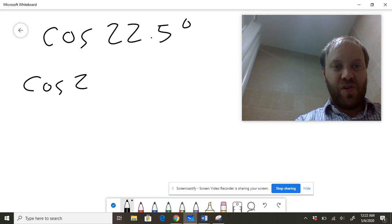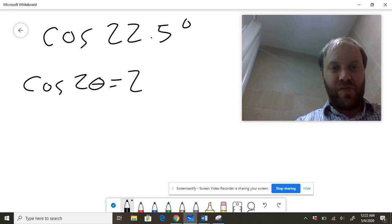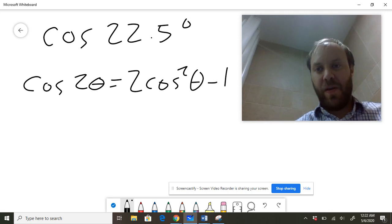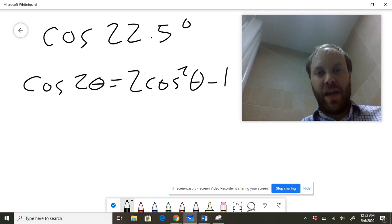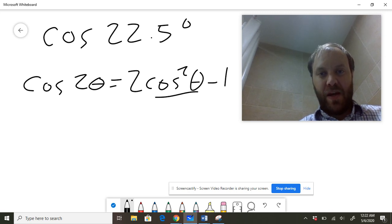Cosine of 2θ is equal to twice the cosine of θ squared minus 1. And I'm actually going to solve for the cosine of θ, so I'm going to add 1 to both sides of this equation.